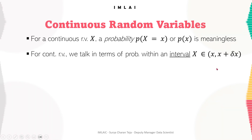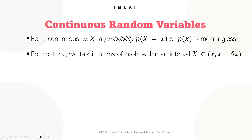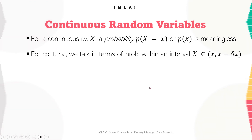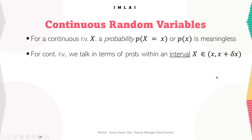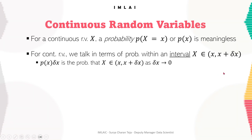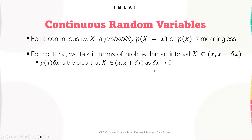For a continuous random variable, we ask: what is the probability that X belongs to the interval (x, x + Δx)? Asking for the probability of a continuous random variable at a single particular value of small x is meaningless. That is why we talk in terms of probability within an interval. So P(x)·Δx is the probability that capital X belongs to (x, x + Δx) as Δx tends to 0.